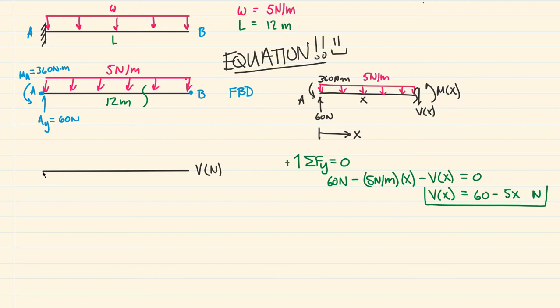That means we can plug in any value of x between A and B and come up with the corresponding shear at that location. If I did V(0), so x = 0, right at the start at point A, we would get 60 - 5(0), and that is 60 newtons. So the shear at x = 0 is 60 newtons.